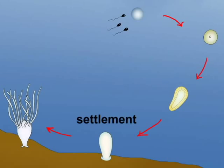The larval stage swims and finds a good place to settle. Therefore, it originates a new polyp.